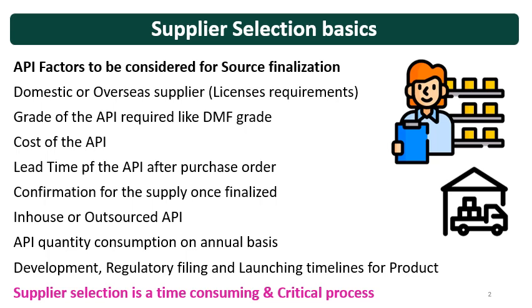Then consider the development, regulatory filing and launching timelines for the product. Once you have the product to be developed, you have to consider the timelines for development, regulatory filing, and launching. You also have to consider the annual consumption of the API when it is produced on commercial scale. Supplier selection or API selection is a very time-consuming and critical process, so it is to be done with great care and understanding, along with risk assessment at every step.